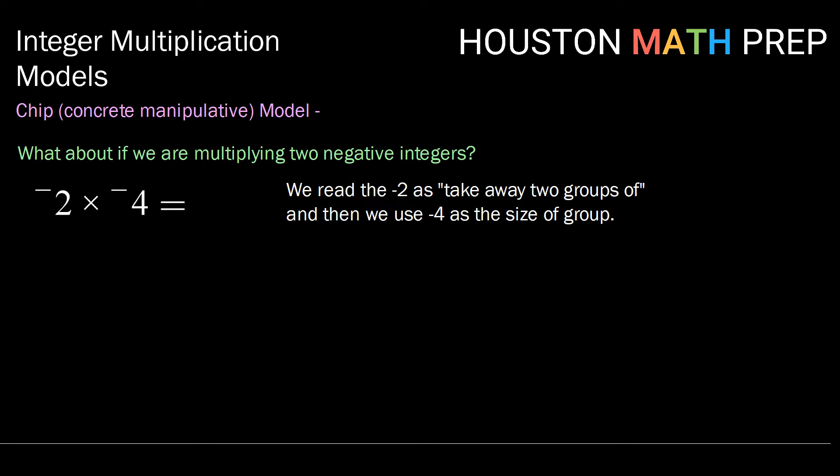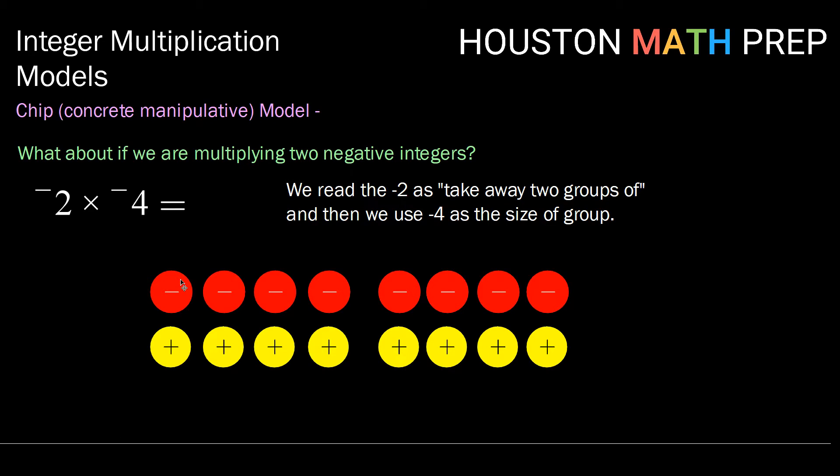We're going to start at 0, and to know how many groups, we take the positive values. 2 times 4, we're going to need 8 zero pairs. So here we have 1, 2, 3, 4, 5, 6, 7, 8 zero pairs.